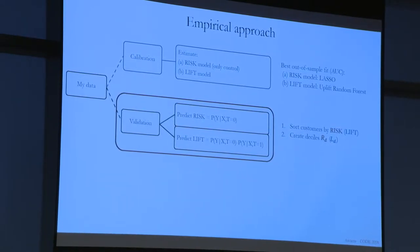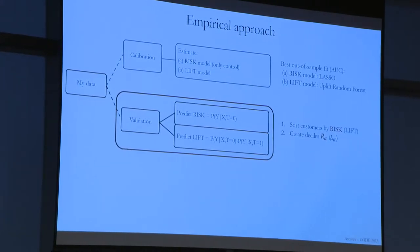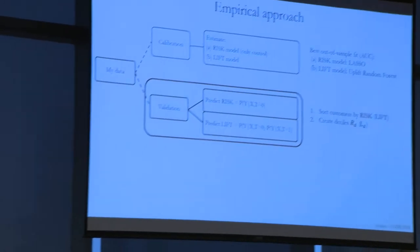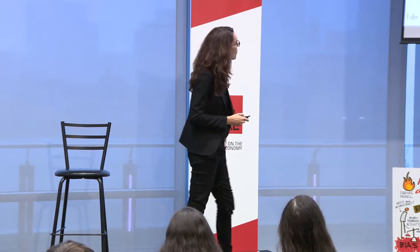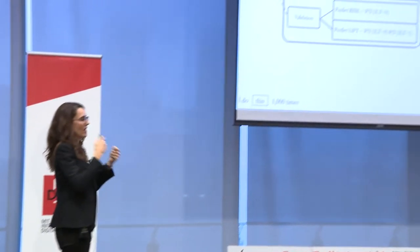Now that I have these deciles, I compute the treatment effect. I know who you are and which bucket you are, and because the experiment was fully randomized, I have treatment and control in every single bucket. I look at the churn rate in each group among treated and control people. I do this about a thousand times so I can have a point estimate and a measure of uncertainty.